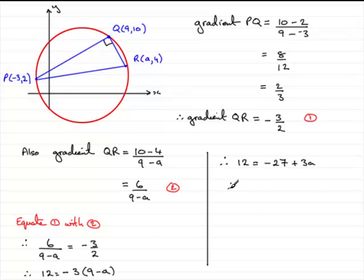And then obviously if I add 27 to both sides, I get that 3a equals 39, and divide both sides by 3, and I end up with a equals 13, as we were expected to show.